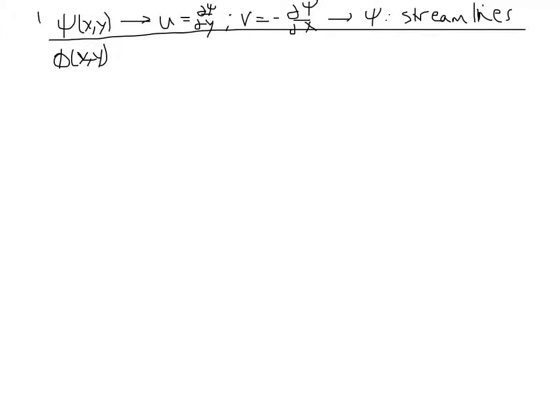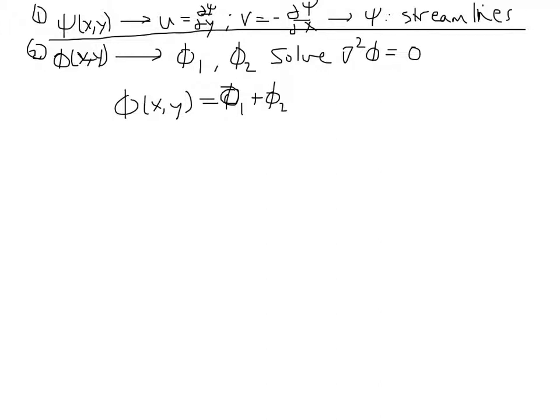The second thing is we talked about the superposition of velocity potentials. So we have phi of x and y, and if phi 1 and phi 2 solve Laplace's equation, then we can define phi of x and y to be any linear combination of phi 1 and phi 2. Here I'll just add them. And we use that in defining all of our superpositions today, which I'll talk about in just a moment.